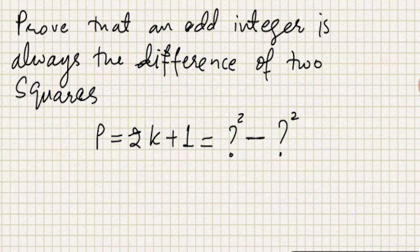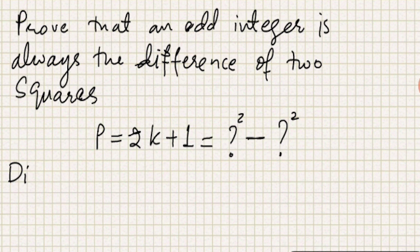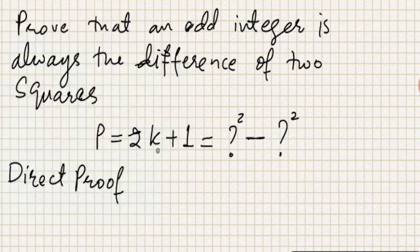There is one logic that says because it's a direct proof, I need to take something which is already there. For example, I have this K here, so I need to introduce squares in terms of this K. This is one thing I could be doing, and let me do that first.